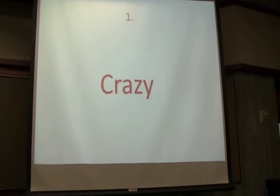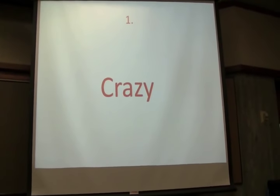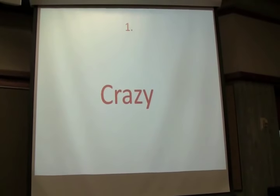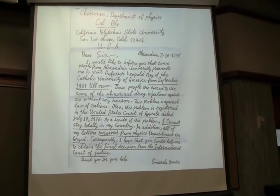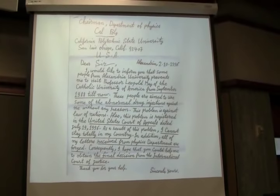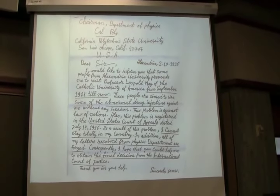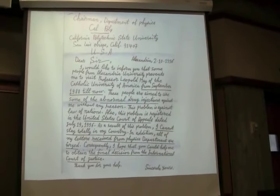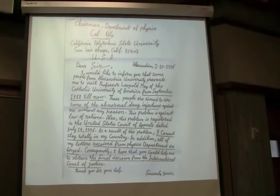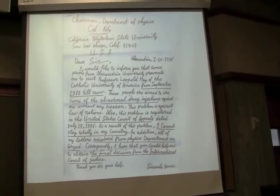So first, let's talk about the crazy. Some of the things that are sent to us are undoubtedly sent to us by people who have a tenuous grasp on reality. For example, this letter. This was sent to us by a guy in Alexandria, Egypt, in the 1990s, where he is talking about the abnormal drug injections that are being used against him without any reason. This problem is against the law of nations, and it's registered to the United States Court of Appeals. Clearly, a paranoid schizophrenic.